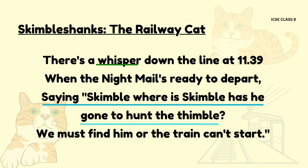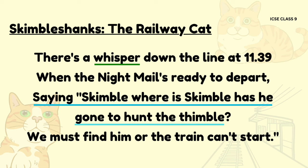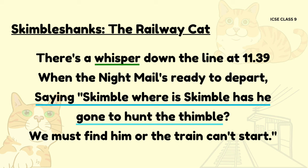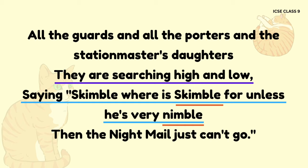There is a whisper down the line at 11:39 when the nightmail is ready to depart, saying Skimble, where is Skimble? Has he gone to hunt the thimble? We must find him or the train can't start. In the very first line, the word 'whisper' helps create auditory imagery. Therefore, it can be considered as an example of onomatopoeia. The first part of line 3 — 'saying Skimble, where is Skimble' — shows examples of repeated consonants. That is why it is an example of alliteration, which also enhances the playful and whimsical tone of the poem.